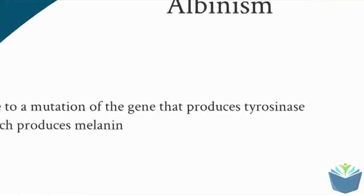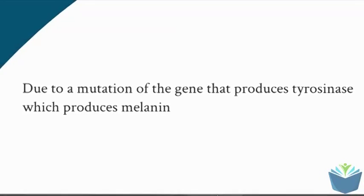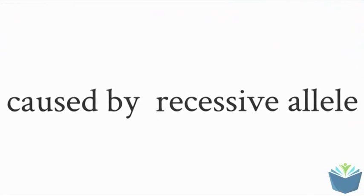The reason why this is an inherited disease is there is a mutation in the gene that produces the enzyme called tyrosinase, and tyrosinase goes on to produce melanin from the cells that produce it. So the mutation means that it cannot be produced and it is caused by a recessive allele.